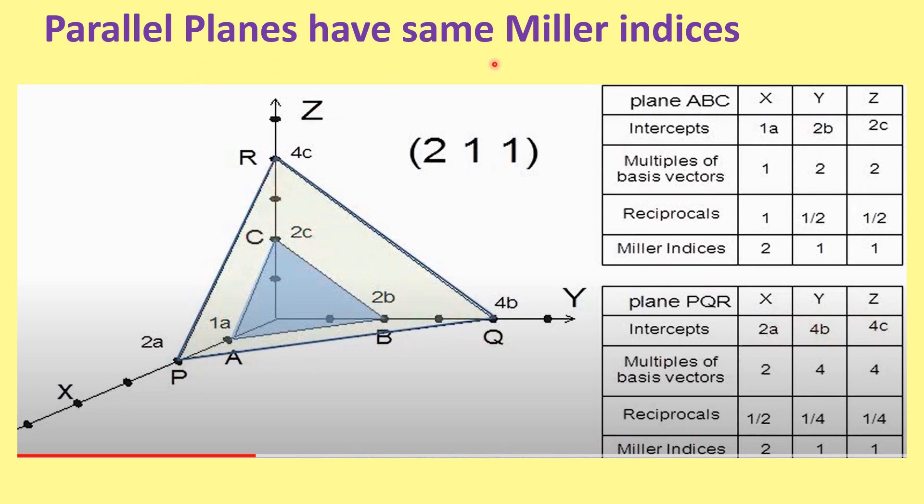Parallel planes have the same Miller indices. Suppose we have two parallel planes: one is ABC and the other is PQR. They have the intercept 1, 2, 2 for the ABC plane. For the PQR plane, the intercept on the x-axis is 2, on the y-axis it is 4, and the z-axis is 4.